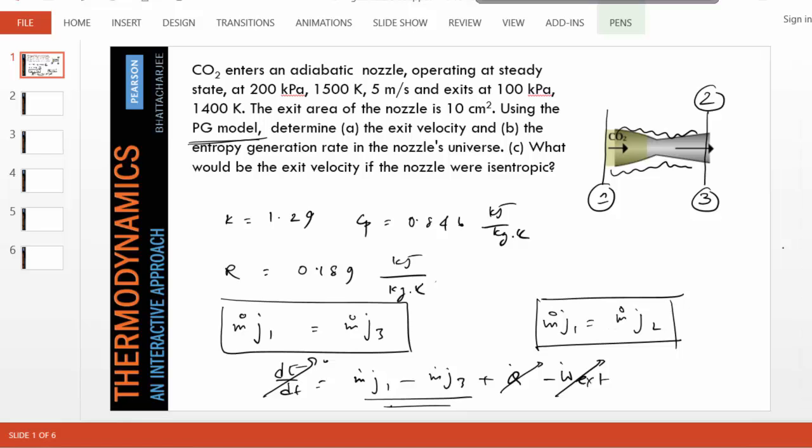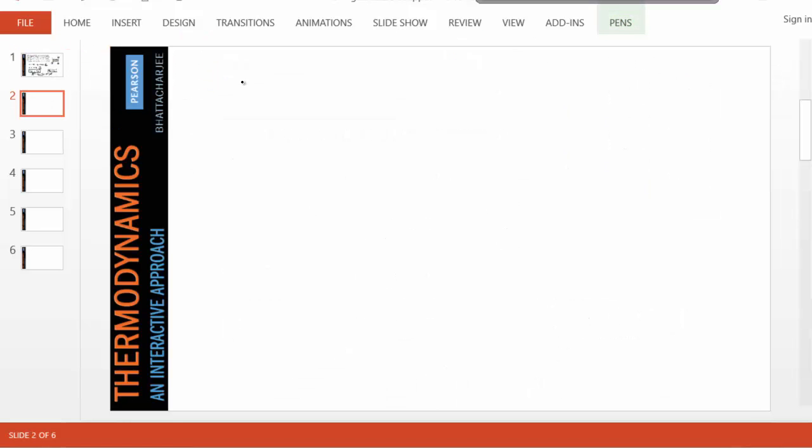So the nozzle equation is basically j remains constant in a nozzle. So j1 equals j3 is the actual nozzle equation, which is h1 plus ke1 equals h3 plus ke3. We are neglecting the potential energy right off the bat. And we know that exit kinetic energy is much bigger than the inlet kinetic energy. Therefore, we can write this equation as h1 equals h3 plus v3 squared over 2000.